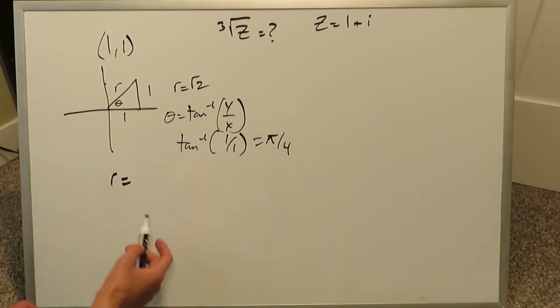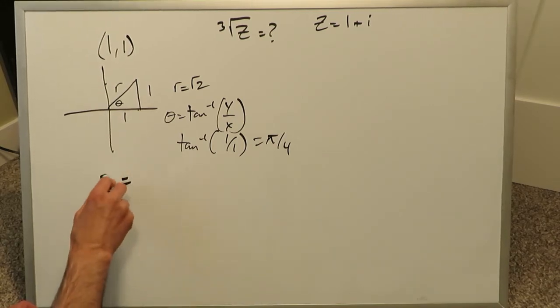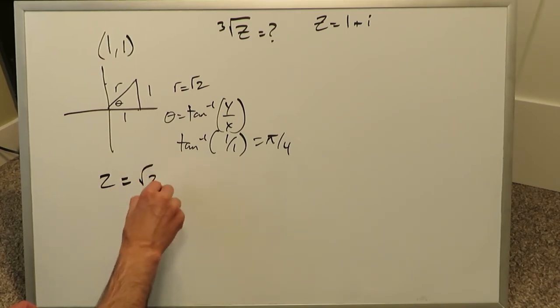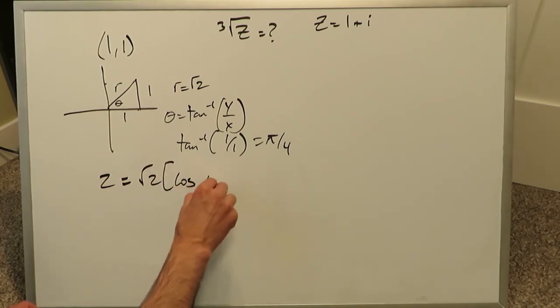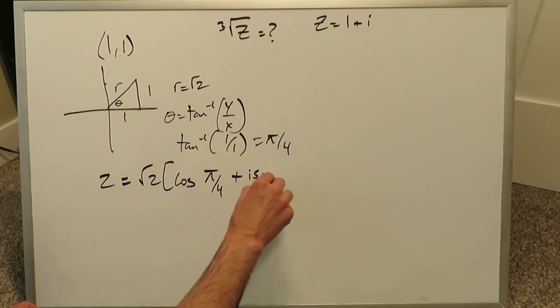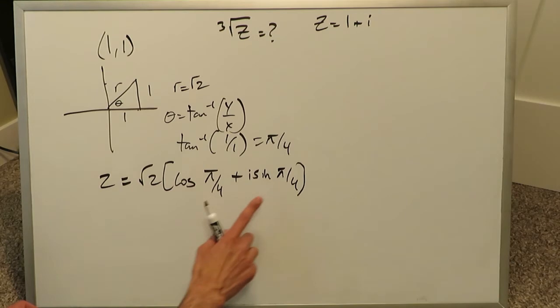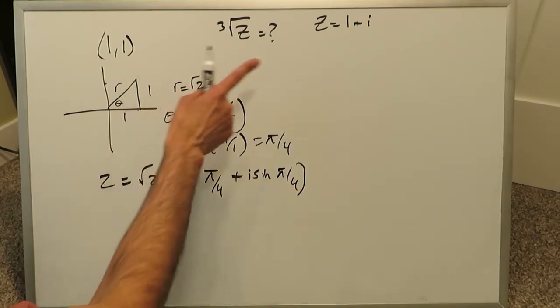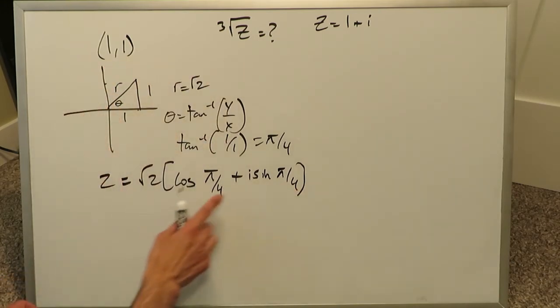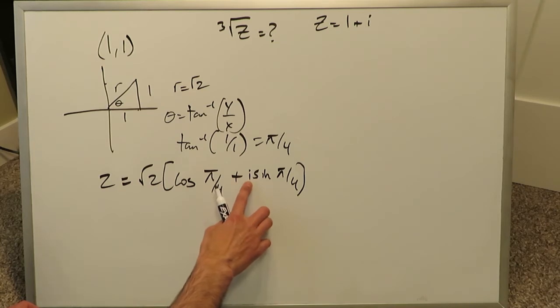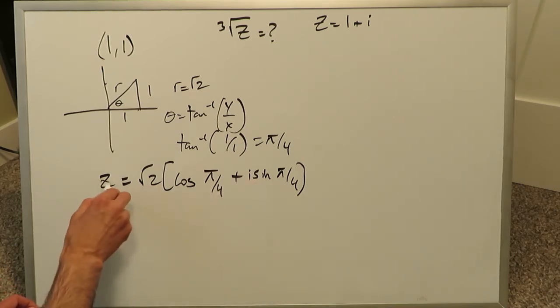The trigonometric form is represented in the following way. Z is equal to r, which is root 2. You have a cosine theta, which is pi over 4, plus i sine theta, which is pi over 4. If you were to open up this parenthesis and multiply everything, you'll end up back to this right here, 1 plus 1, or you can say 1 plus i, because the i will retain and multiply with the 1. Anyhow, this is what we need to start this out.